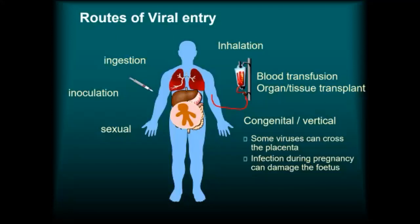There are different routes of viral entry into the human body. It could be inoculated, it could be inhaled — like what is happening with COVID-19 now. It could be sexually transmitted like HIV. It could be vertical or congenital — from the mother to the fetus through blood, which is also one way HIV spreads. And it could be by injection — like a biological weapon injected into the body.